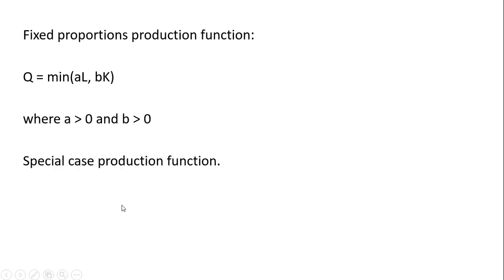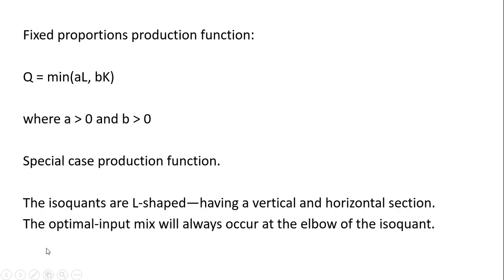This is a special case production function. The isoquants from this type of production function are going to be L-shaped, having a vertical and horizontal section. The optimal input mix will always occur at the elbow of the isoquant, where the horizontal and vertical section meet.